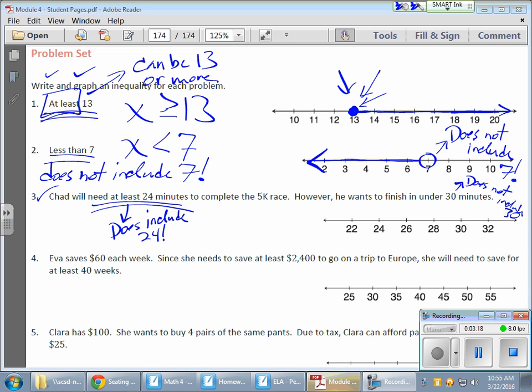So an open 30 circle, which shows that it does not include my 30, and at least 24, so I'm going to show a closed circle because it does include that 24. That's my nice little range there, so I'm going to connect these two.